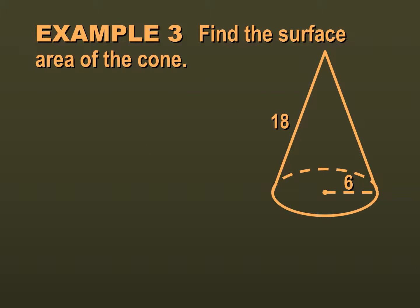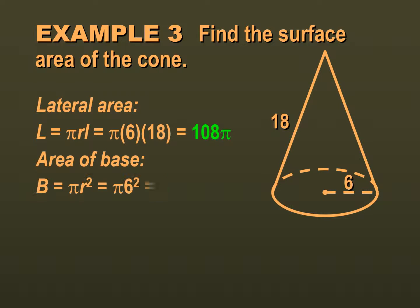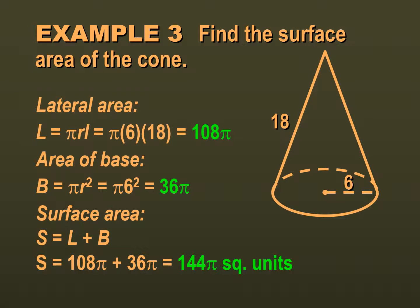Let's find the surface area of this cone. Starting with lateral surface area, which is πrl: we have π, and our radius is 6, times our slant height, which is 18. So we get 108π, because 6 times 18 is 108. Now we find the area of our base, which is πr²: π times 6 squared, so 36π. Our total surface area is 108π plus 36π. Combining like terms, we get 144π.